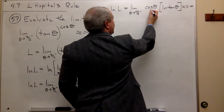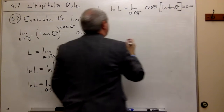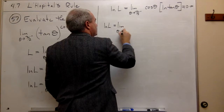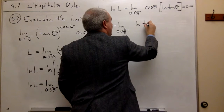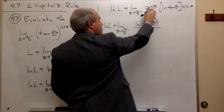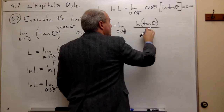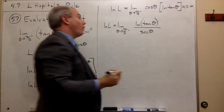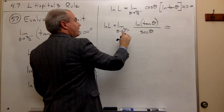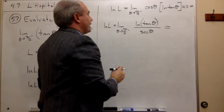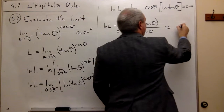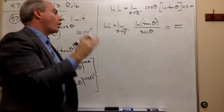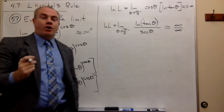So I'm going to take cosine of theta and put it on the bottom of the fraction. I get ln of L is equal to the limit as theta goes to pi over 2 from the left of ln of tangent theta divided by 1 over cosine of theta, which is secant of theta on the bottom. Now we check the form: ln of tangent of pi over 2 gives infinity, and secant of pi over 2 is 1 over cosine of pi over 2, which is infinity. So we're in the infinity over infinity form — perfect for L'Hôpital's rule.